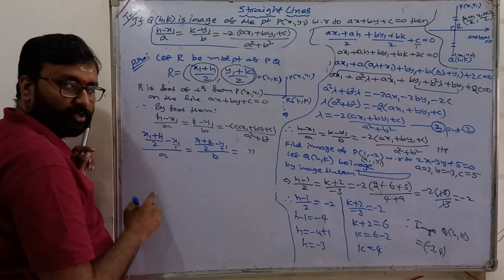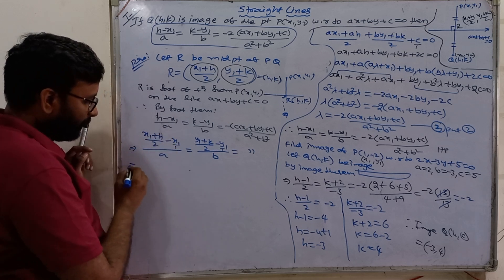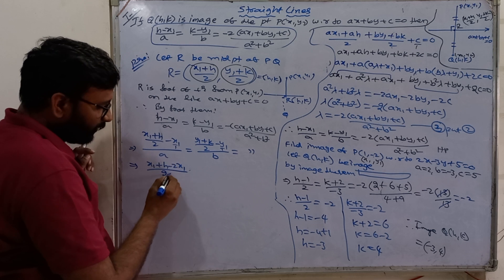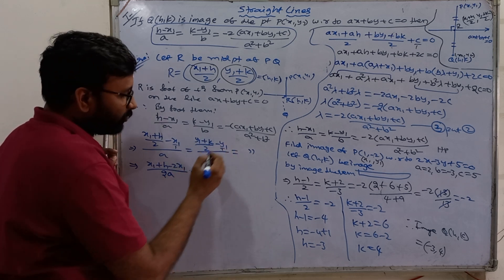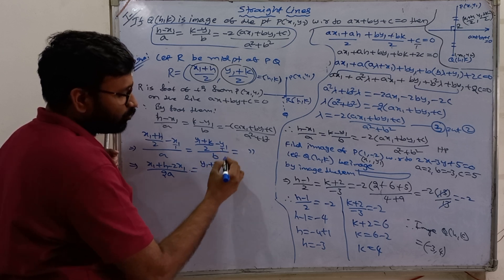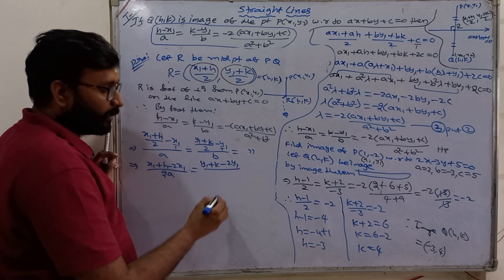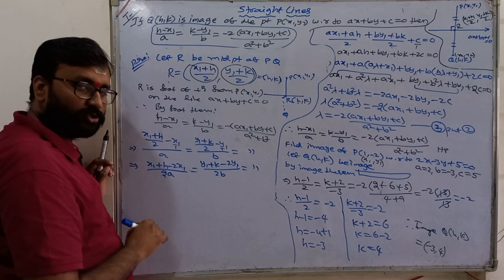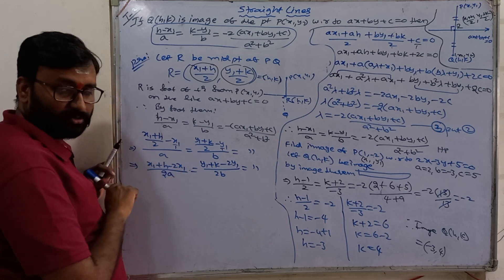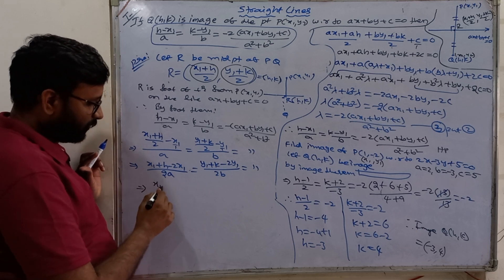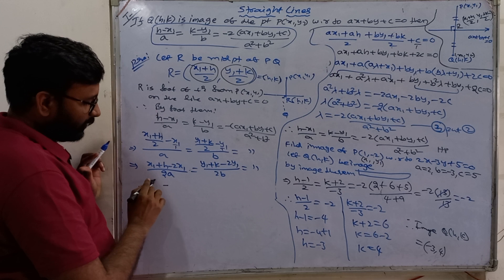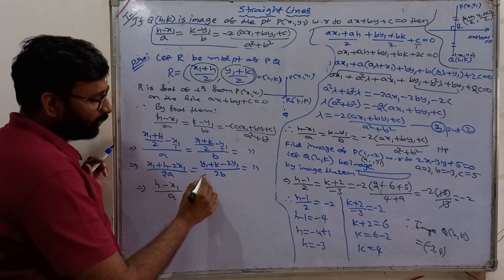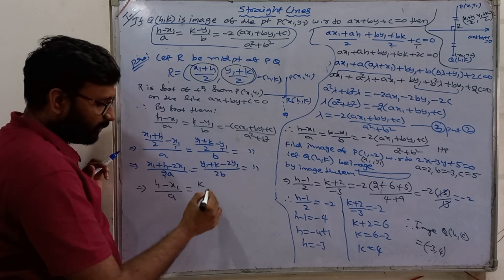LCM is 2. Numerator x1 plus h minus 2x1 by 2 and this denominator is 2A. Next, y1 plus k minus 2y1 by 2 into B, 2B. We observe the denominator, 2 common. Numerator, x1 minus 2x1, h minus x1, so we can write this as h minus x1 by A equal to k minus y1 by B.